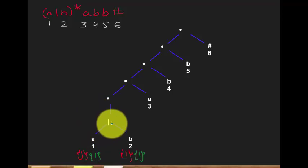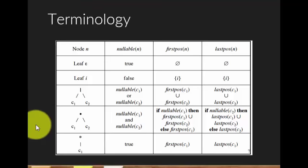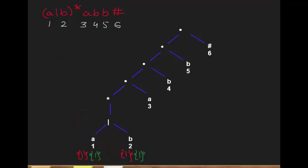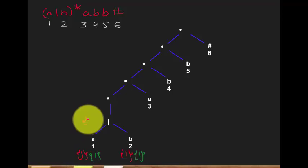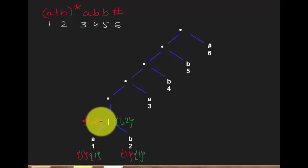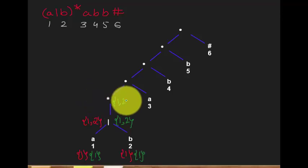Now let's find the firstpos of the OR node. As per the rule, firstpos of an OR node is the union of C1 and C2's firstpos. Here C1 is A and C2 is B, so the union gives us {1, 2} — that's the firstpos. The lastpos is also {1, 2}. For the star node, the firstpos and lastpos of the child propagate up, so firstpos and lastpos of the star node are also {1, 2}.